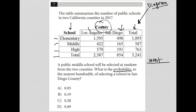The denominator of that fraction is what I'm choosing from — what you have to choose from. So what do I want in this case? I want a public middle school in San Diego County. How many of those are there? In San Diego County, there are 165 middle schools. So 165 is my numerator.